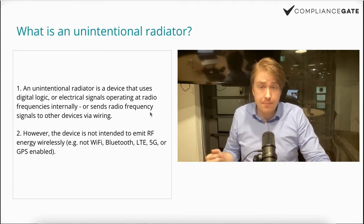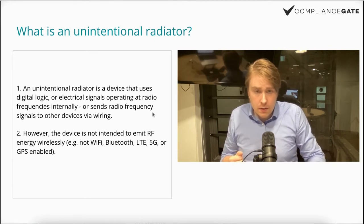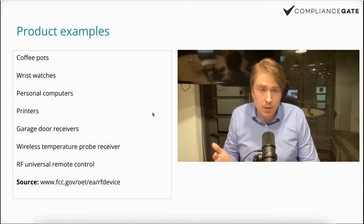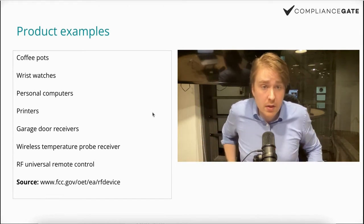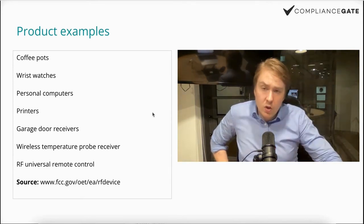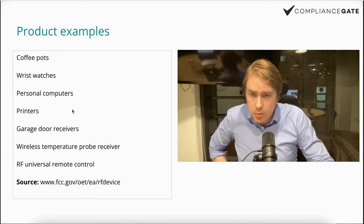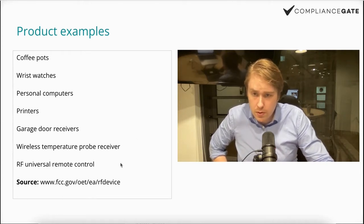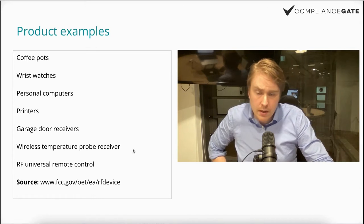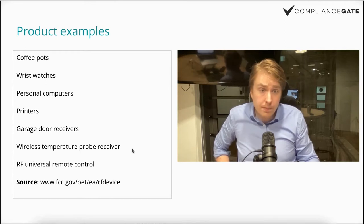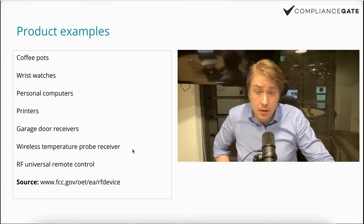What you see here is a wire, so this microphone could indeed be an unintentional radiator. To help you distinguish, here are some examples straight from the FCC.gov website in one of their guidance documents. Examples they provide include copy pots, wristwatches, personal computers, printers, garage door receivers, RF universal remote controls. Some of these are wireless but in these examples they are referring to those that are not using radio frequency.